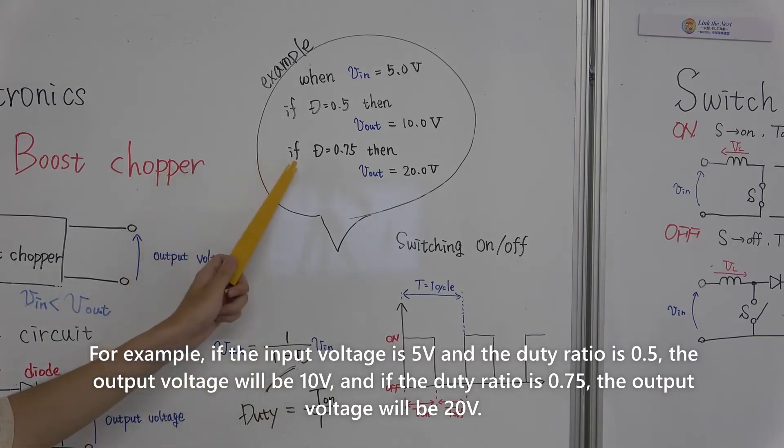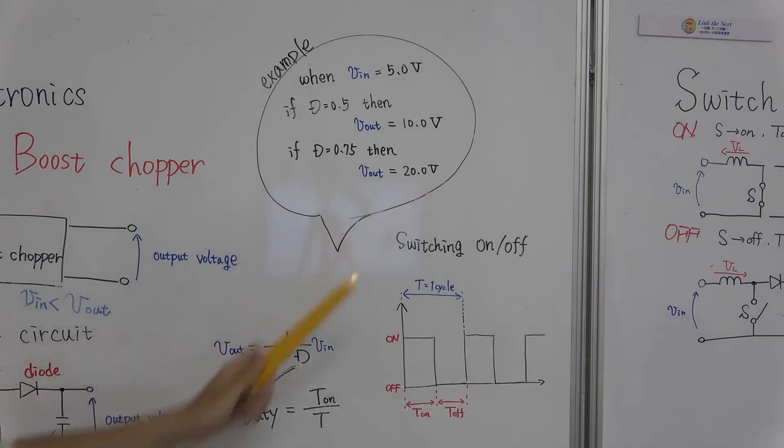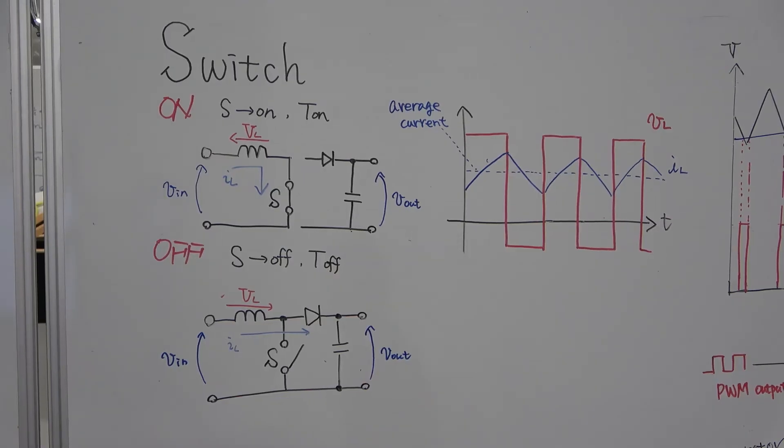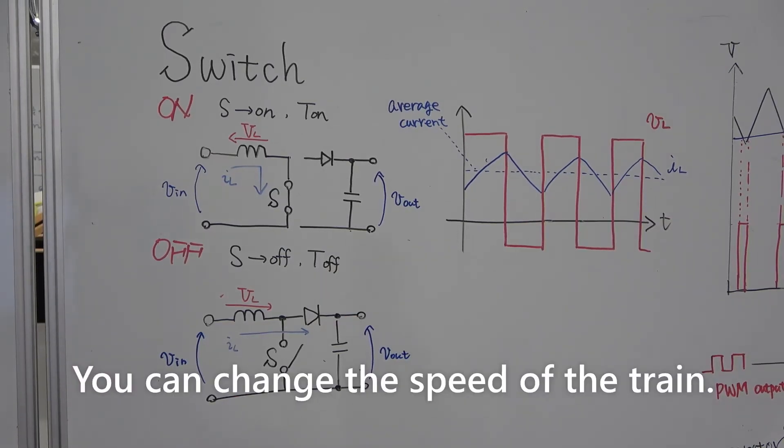And if the duty rate is 0.75, the output voltage will be 20V. This allows a higher voltage than the input voltage. You can change the speed of the train.